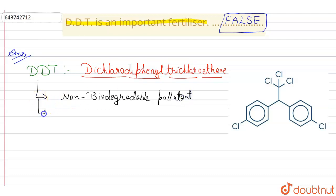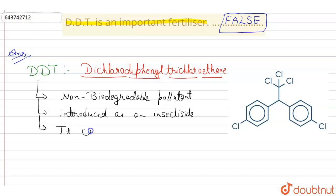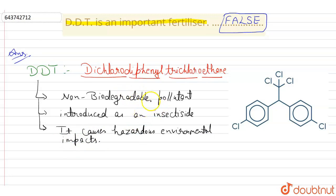DDT was introduced as an insecticide and became famous for its hazardous environmental impacts. It is a non-biodegradable pollutant and an insecticide used in agriculture, but now it is banned in most countries.